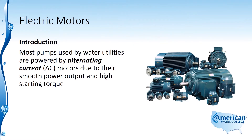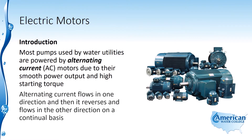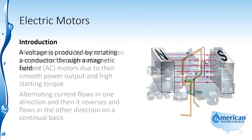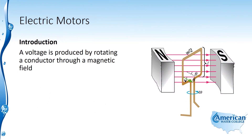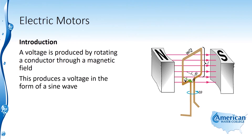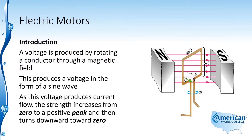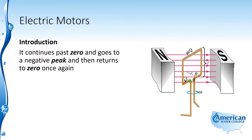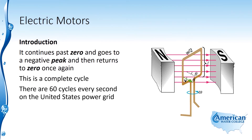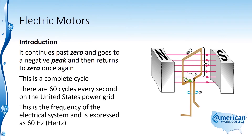Most pumps used by water utilities are powered by alternating current motors due to their smooth power output and high starting torque. Alternating current flows in one direction and then reverses and flows in the other direction on a continual basis. A voltage is produced by rotating a conductor through a magnetic field, producing a voltage in the form of a sine wave. The strength increases from zero to a positive peak, then downward to zero, continues to a negative peak, and returns to zero — completing one cycle. There are 60 cycles every second on the United States power grid, expressed as 60 Hertz.